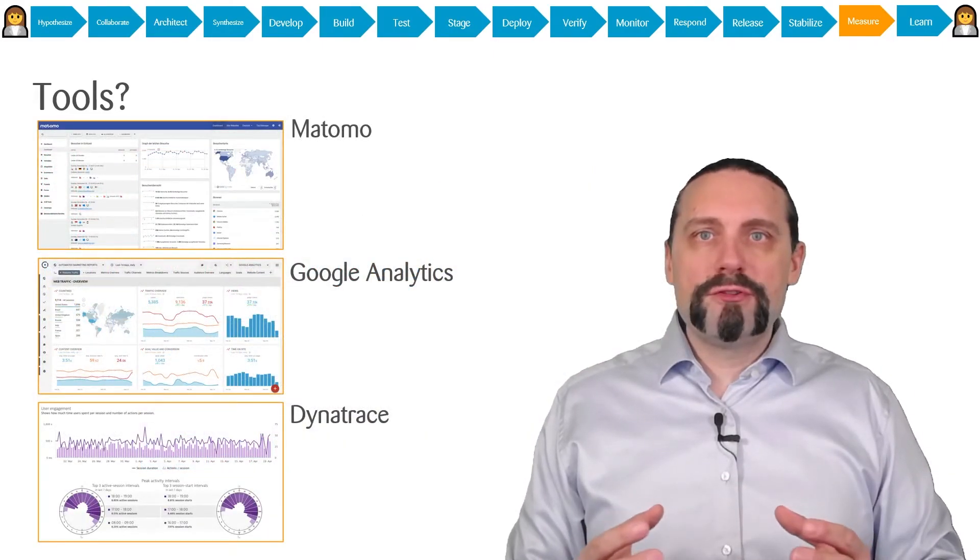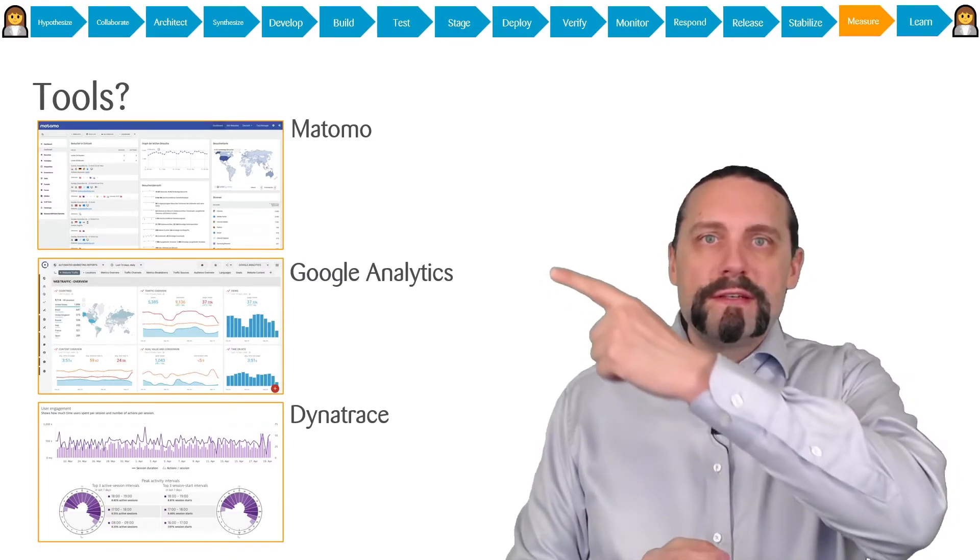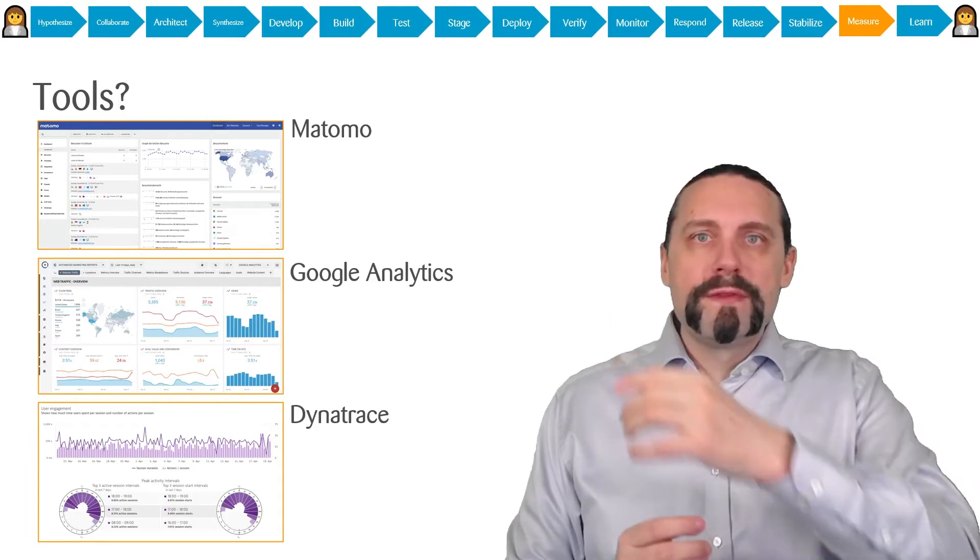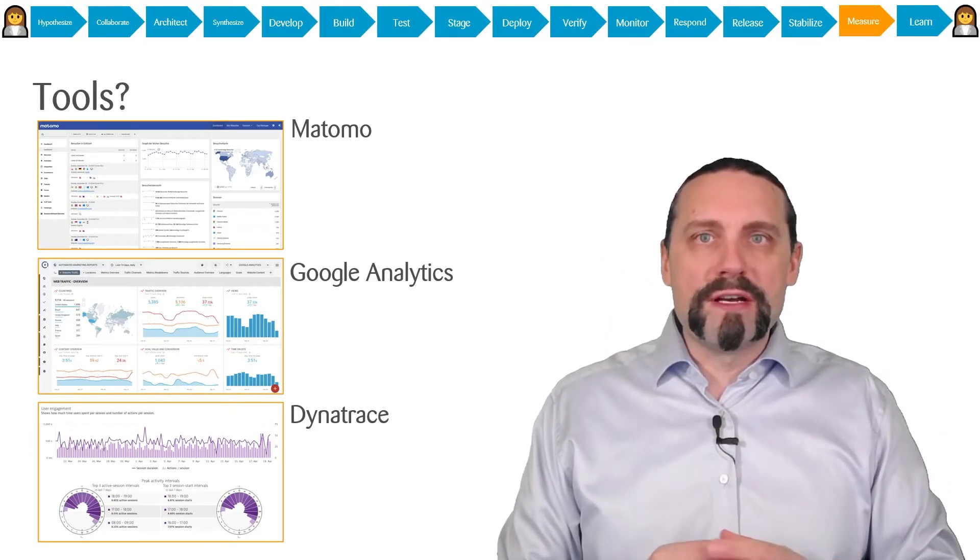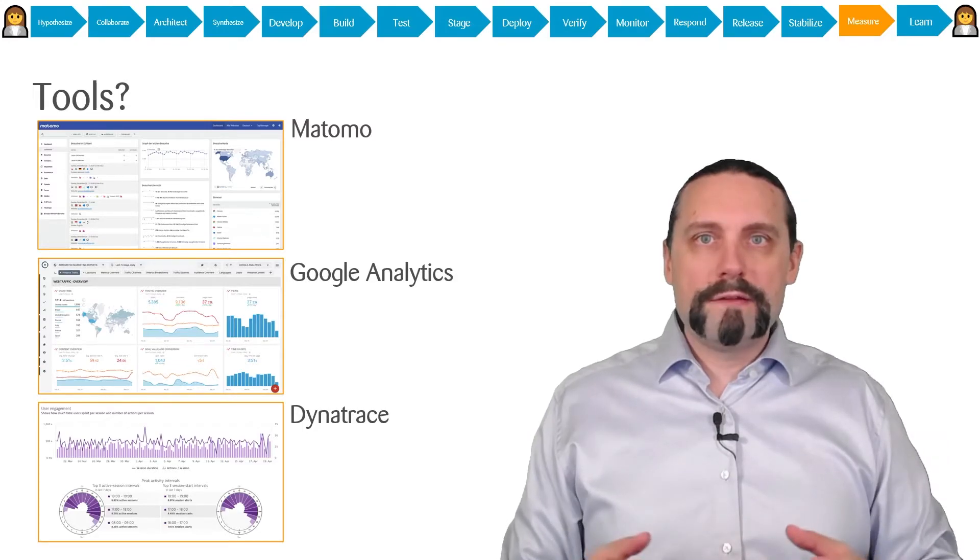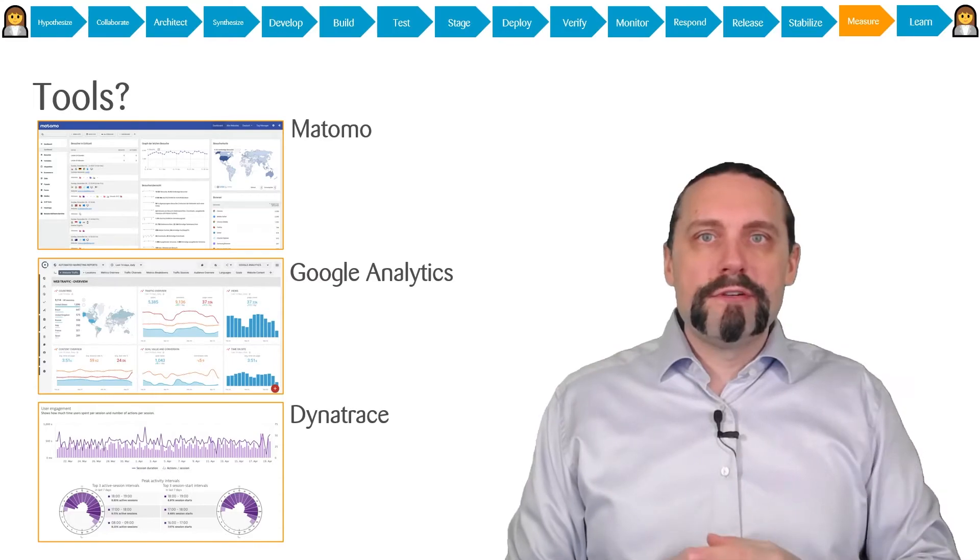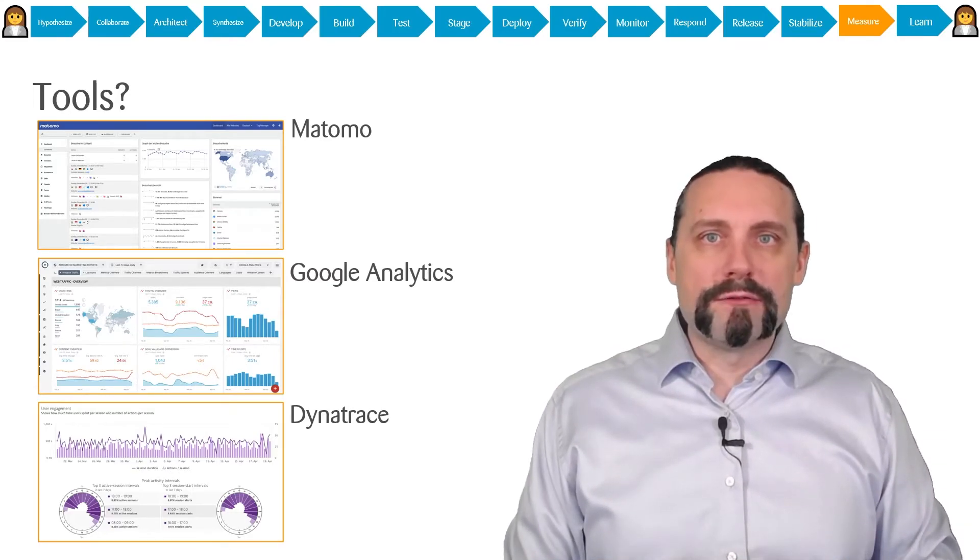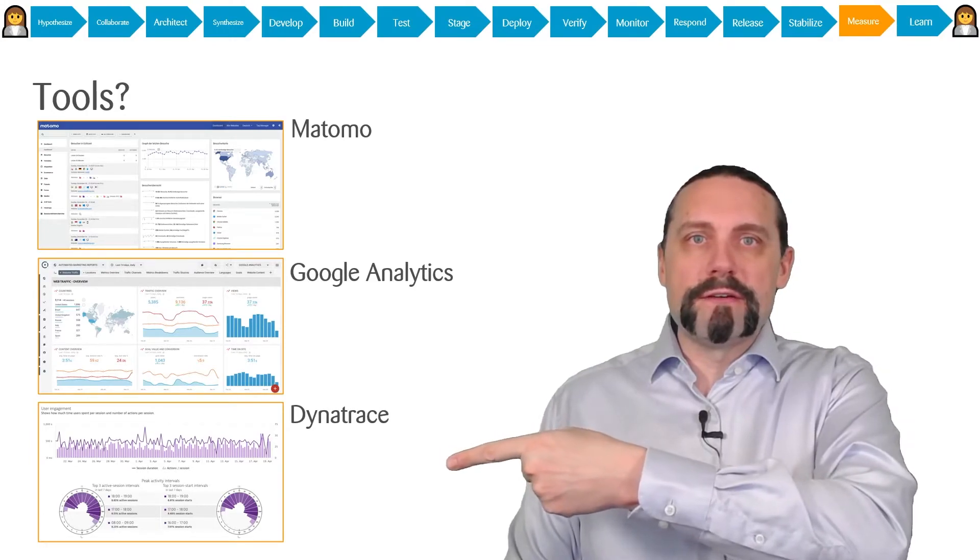I brought you three examples of such tools. First there is Matomo which you can use when you're in an on-premise environment. There is Google Analytics which you can see here, which you can use when you're in the cloud. And the third one is Dynatrace which you can see down here.